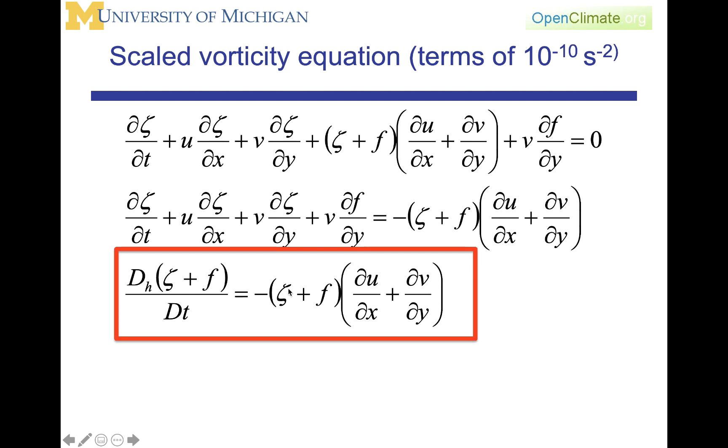zeta plus f, is equal to zeta plus f, the absolute vorticity, times the divergence, where we have here the divergence of the horizontal wind. This is the k component of vorticity, that is, the vorticity around the local vertical.